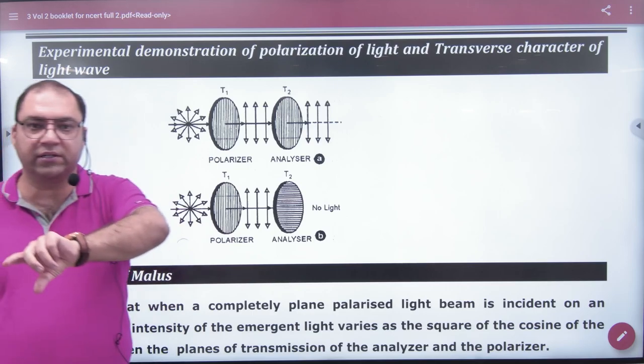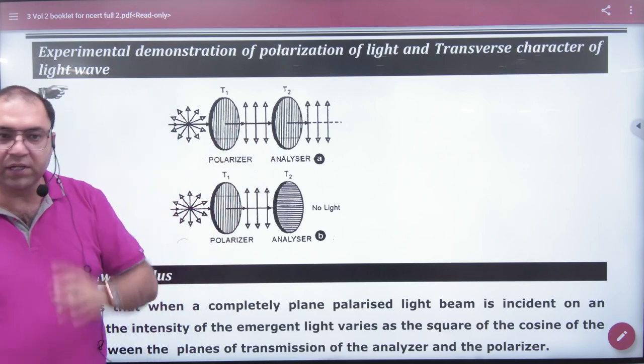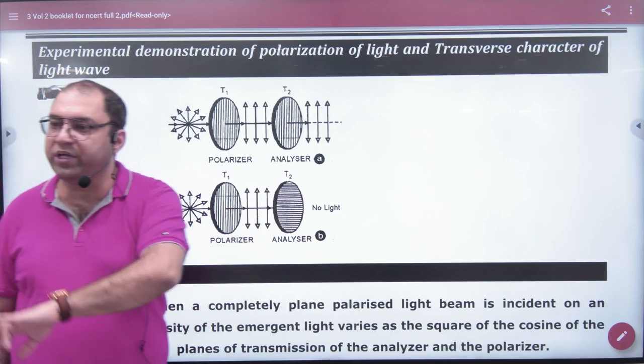Polarizer means what does it do to light? Polarize. The other same crystal is the tourmaline crystal. It's called analyzer. It analyzes the light to determine if it's polarized or not.